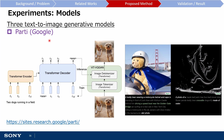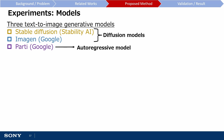The final model they evaluated is called Parti, again released by Google. This is different from Stable Diffusion and Imagen because it is an auto-regressive text-to-image generative model. Rather than using a diffusion process, Parti models text-to-image generation as a sequence-to-sequence modelling problem, where an encoder-decoder transformer is used to process text inputs to produce image tokens, which are then processed by VQGAN to produce photorealistic images. To summarise, the authors evaluate three text-to-image generative models: two diffusion models and one auto-regressive model.